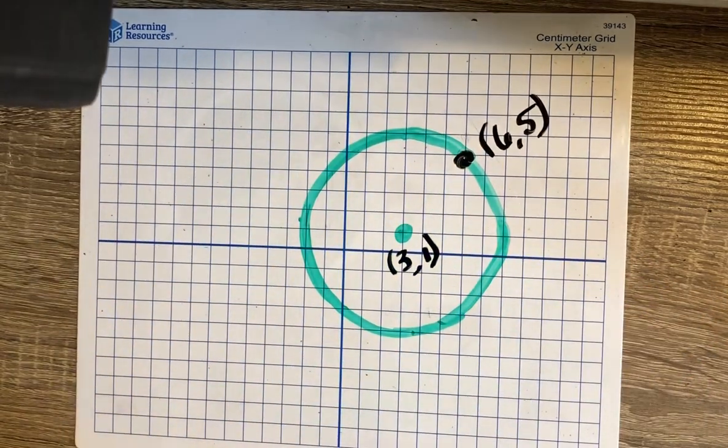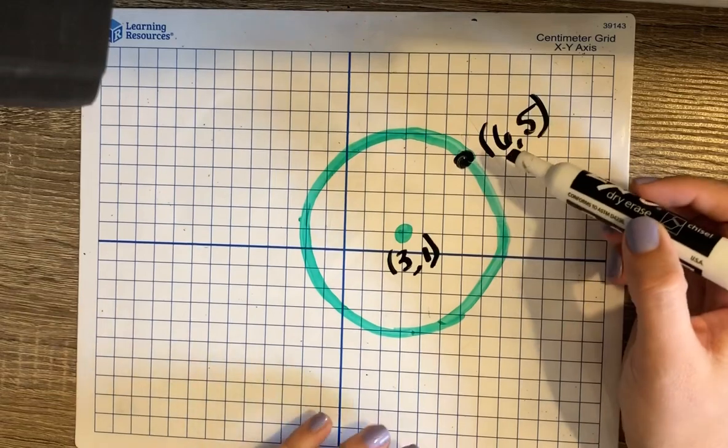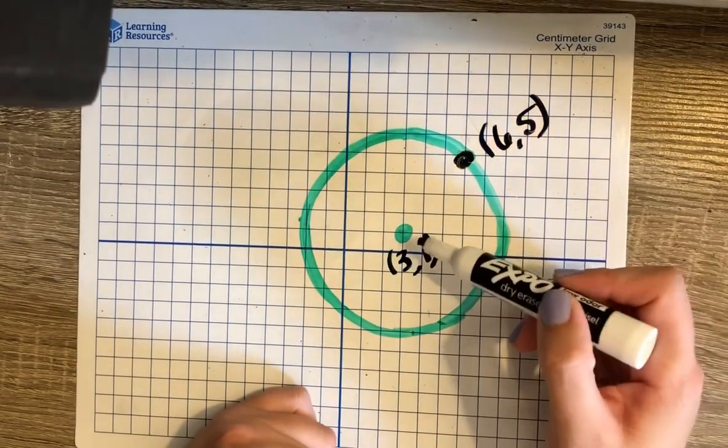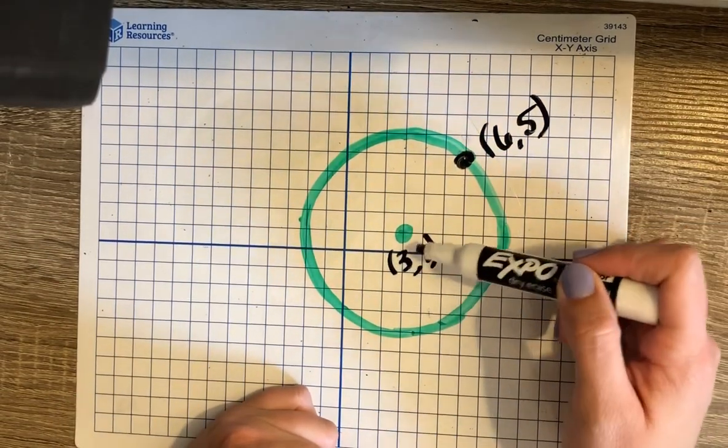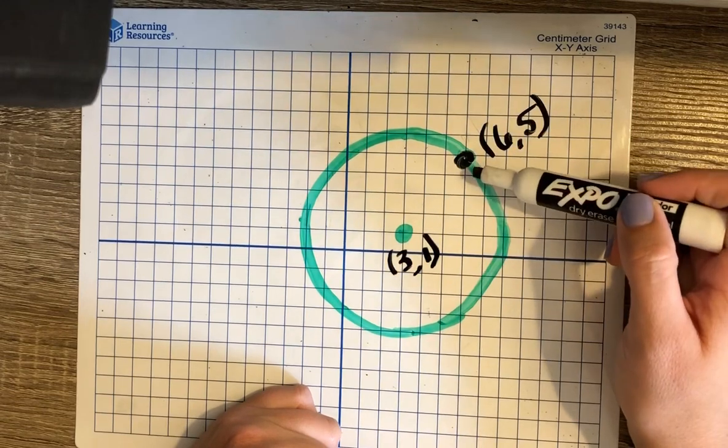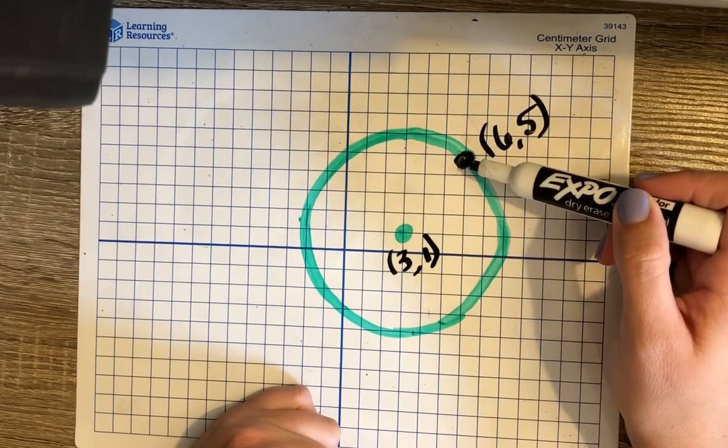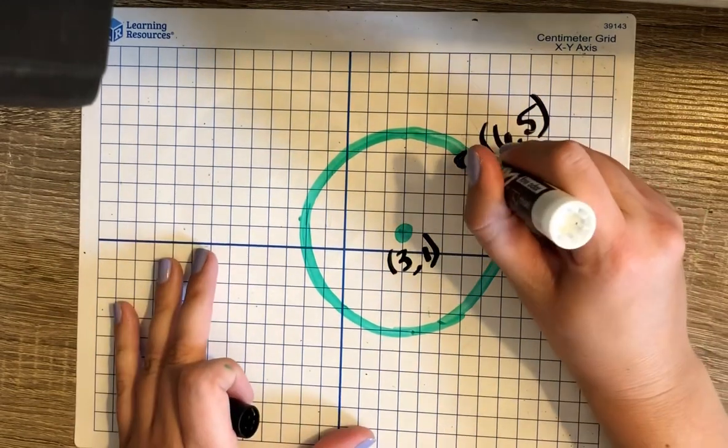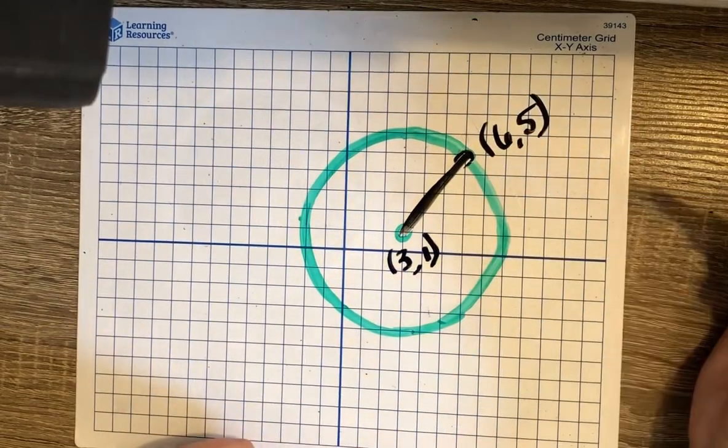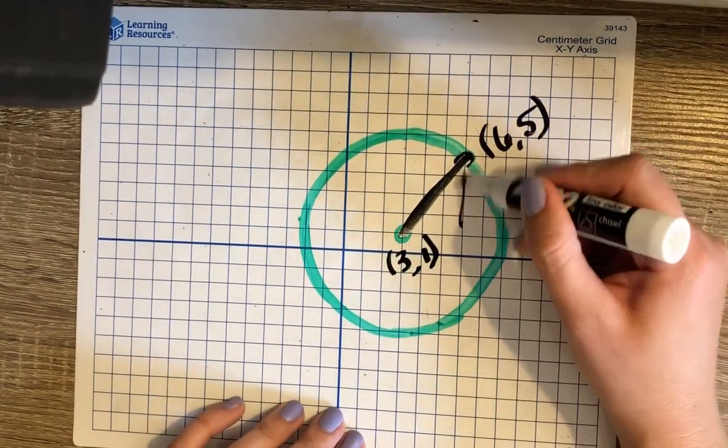The first thing we need to determine is the radius. In this case I have a circle with center (3, 1) and a point on the circle at (6, 5). I'm going to determine the radius of this circle by using the Pythagorean theorem. I'm going to draw in the rise and the run to create a right triangle.